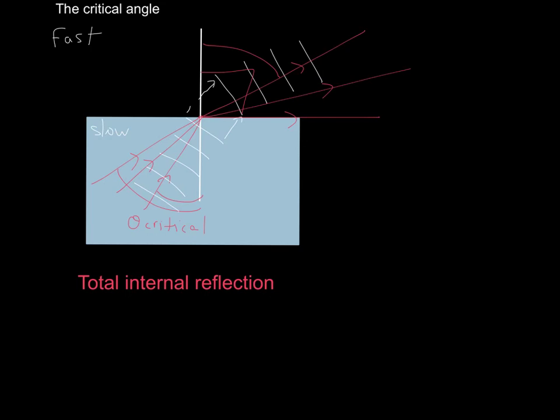Good. So now we know that there is a certain angle, called the critical angle, for which there is total internal reflection. For any angle equal or bigger than the critical angle, nothing will come out. But we would like to be able to calculate this, because this is physics. We don't just do drawings, we do numbers.